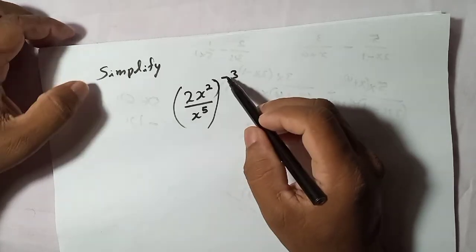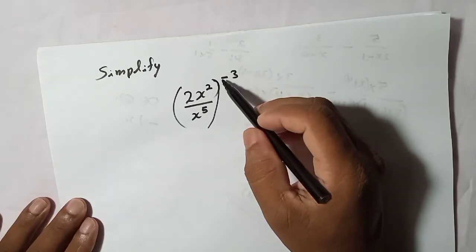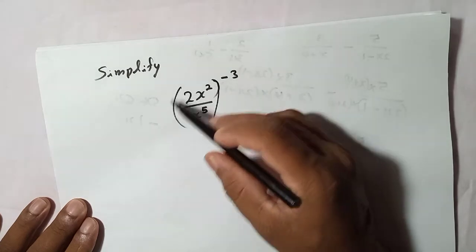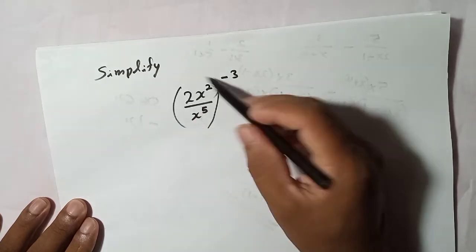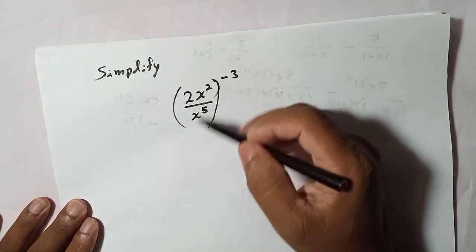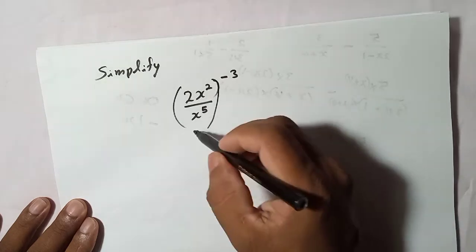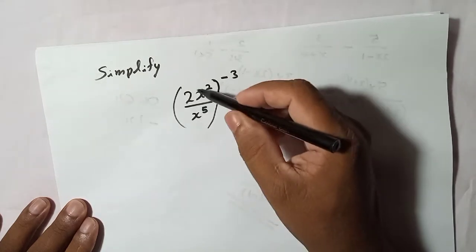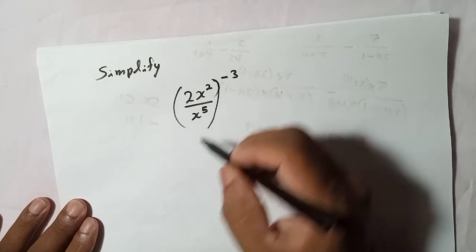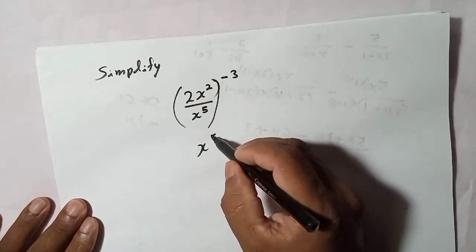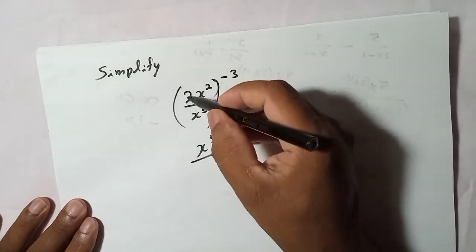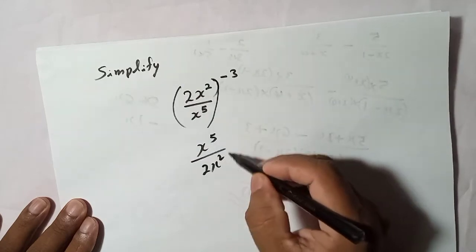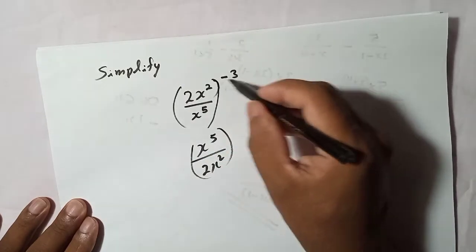What we need to do is make this negative to positive. Very simple - this fraction here, we have a fraction inside the bracket, so get the reciprocal of that. Let me just change this fraction upside down, so x⁵ up and 2x² down like this.